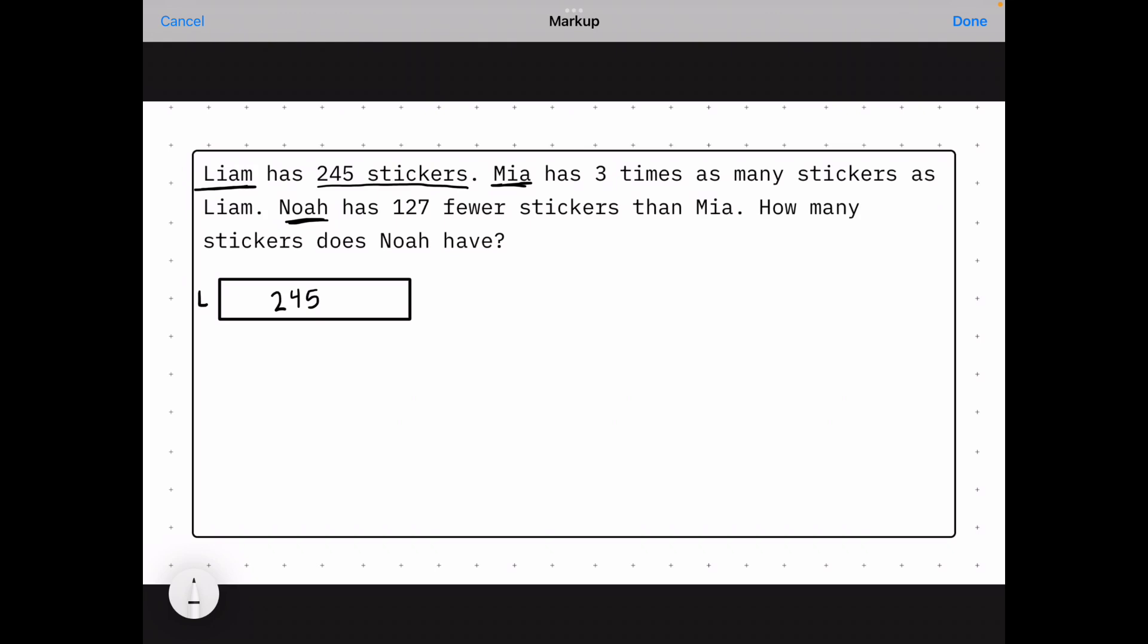Mia has three times as many stickers as Liam. So that means Mia is going to have more. And then it just tells us the clue is three times as many as Liam, which we know is 245.